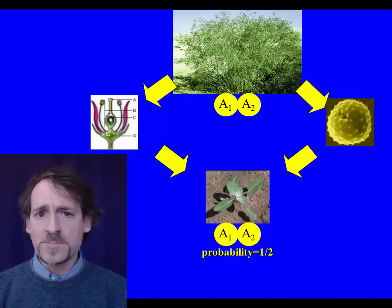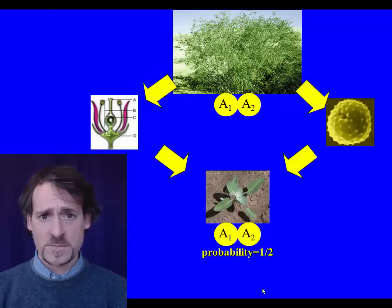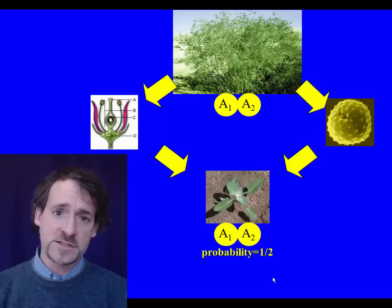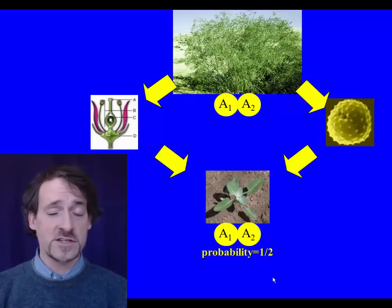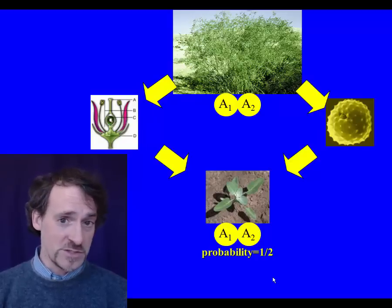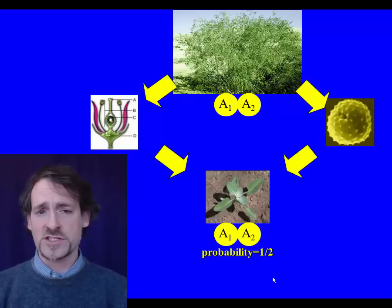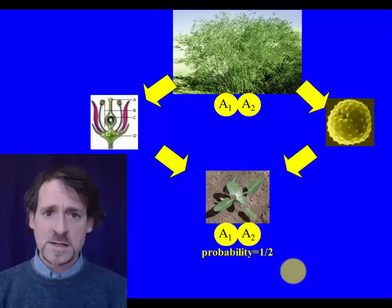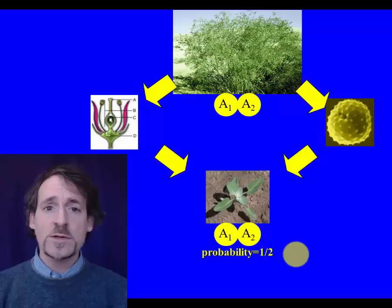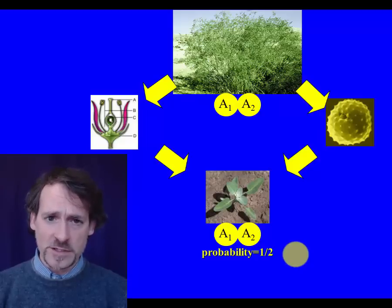As time goes on, even if this individual, this first generation offspring, turns out heterozygous, the next generation there's a 50% chance that one of the alleles will be lost. And the generation after that, there's a 50% chance that one of them will be lost and so on. So that if enough time goes by, it's almost certain that one of the alleles or the other will be completely lost from the population.